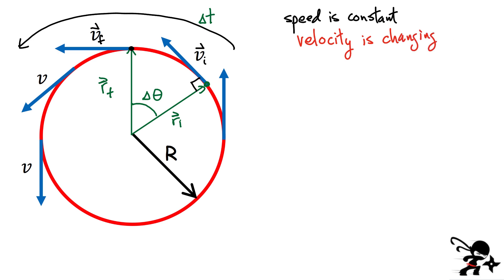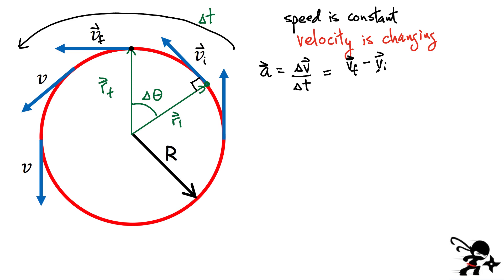The definition of acceleration is the change of velocity as a vector over the change in time. This is the formula we're going to work with. A change of velocity is always a final value minus an initial value, divided by the change in time.